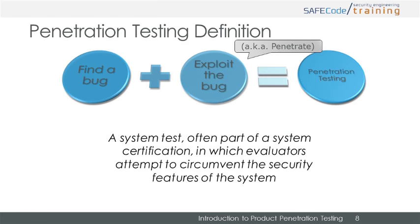The security industry generally recognizes penetration testing as being a two-part process: finding a security bug and then taking advantage of the bug once found. This taking advantage of the bug is commonly referred to as exploiting the bug or penetrating the target. A classic security industry definition of penetration is a system test, often part of a system certification, in which evaluators attempt to circumvent the security features of the system.